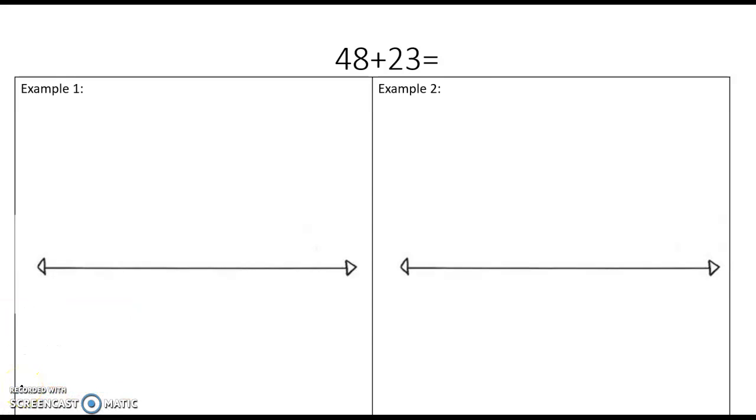So we're starting with 48. You can see that 48 is our first addend. So the first number I'll put on my number line is 48. I see that I'm adding 23 to 48. Now I can break my 23 up into two tens and then three ones.